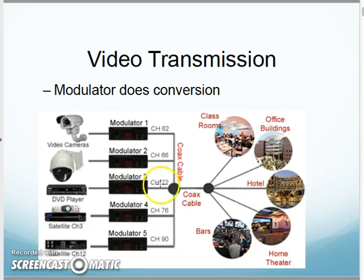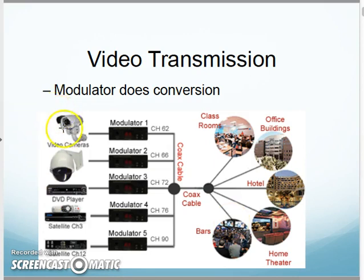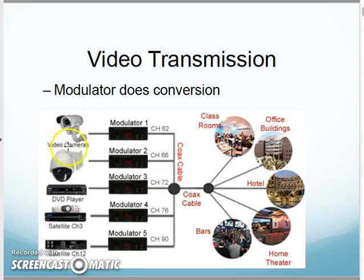For example, if I have multiple different video signal inputs, modulators can modulate them to channels you'd get on your TV — channel 67, channel 68, channel 69. These different inputs can be modulated into channels. In a hotel scenario, this input is ESPN, this is your weather channel, this is your movie channel. Different inputs coming from different antennas and satellites can be modulated into certain channels that you get on your cable television package.